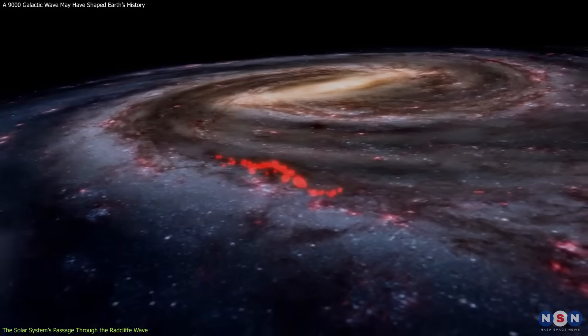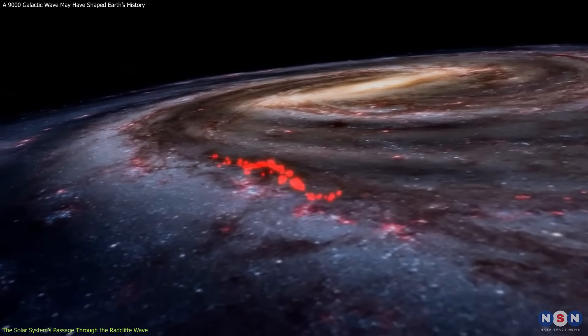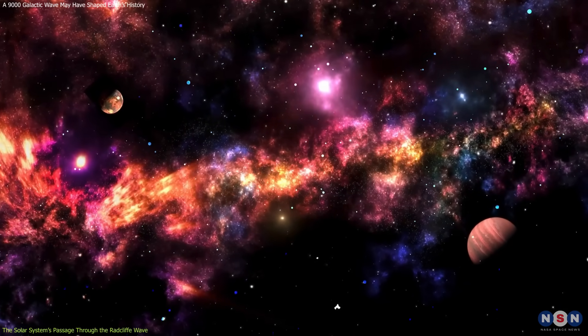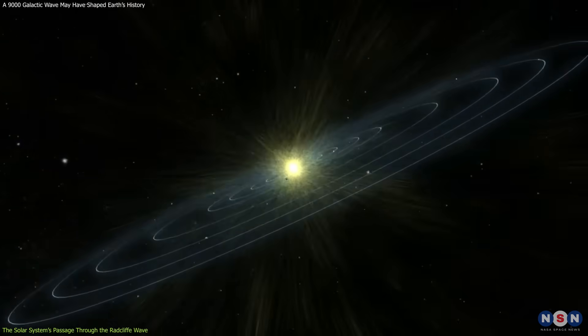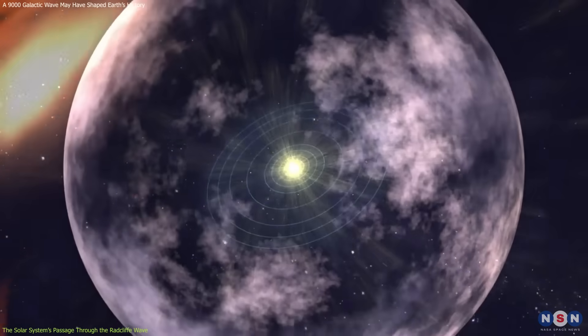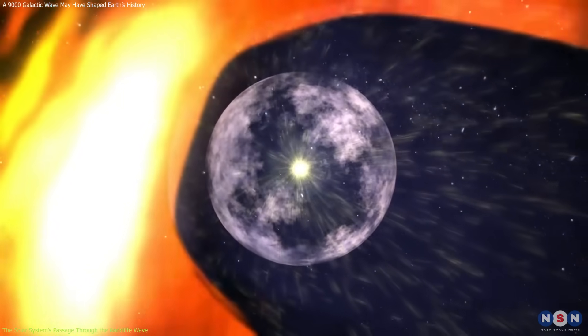What does this mean? Passing through the Radcliffe Wave's denser regions would have increased the amount of interstellar material the solar system encountered. The heliosphere, the magnetic shield formed by the solar wind, could have been compressed due to external pressure from this dense gas.